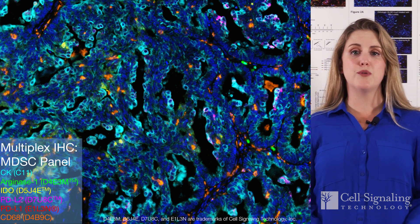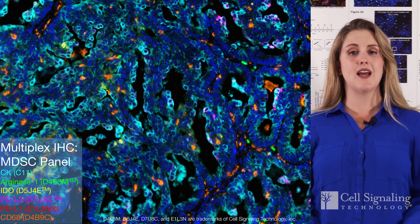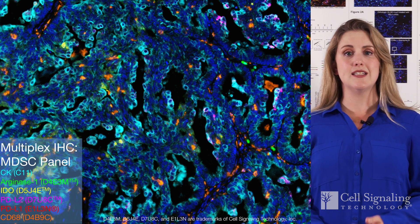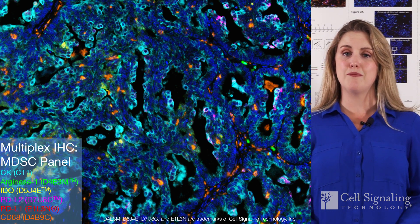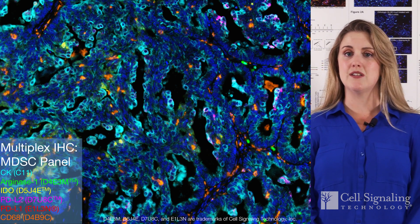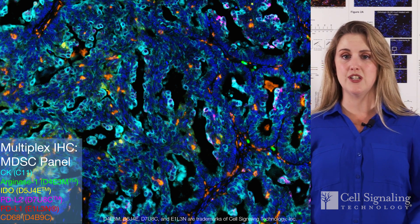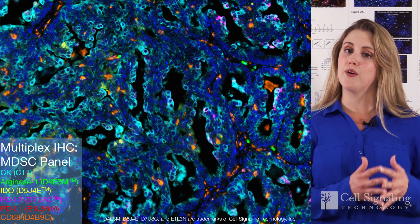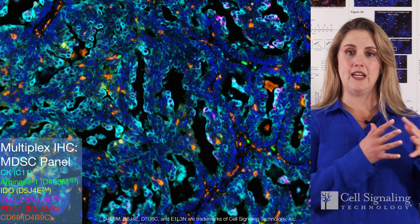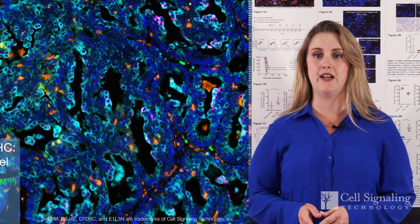While a few proteins unique to each functional state have been identified, scientists continue to struggle to search for better, more specific markers delineating the two. Many of the proteins controlling the functional state of macrophages are intracellular, making extracellular labeling insufficient, so complex protocols combining intracellular and extracellular detection simultaneously are necessary.